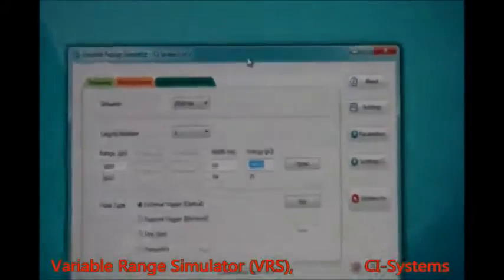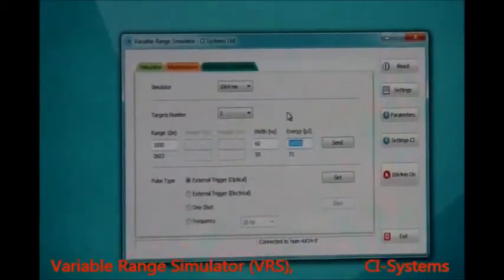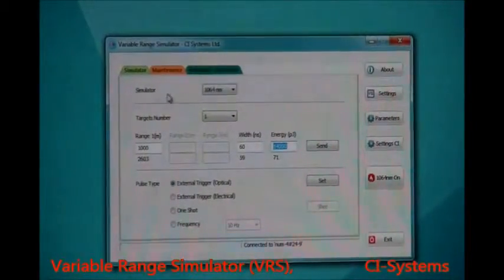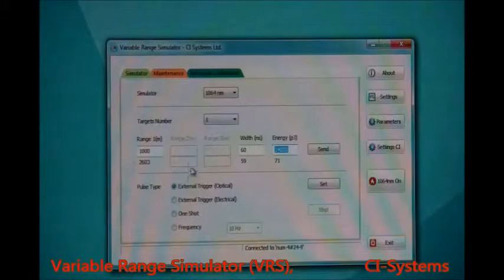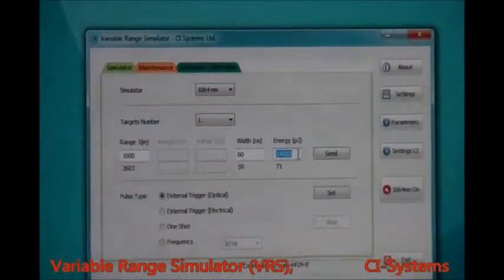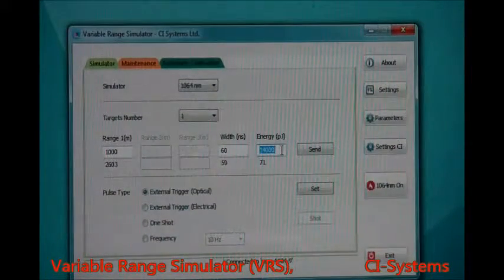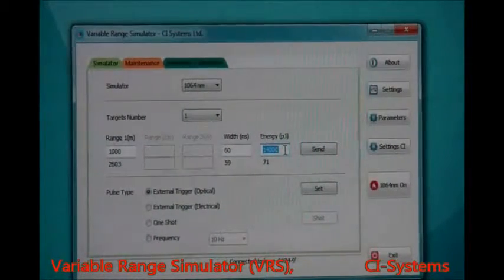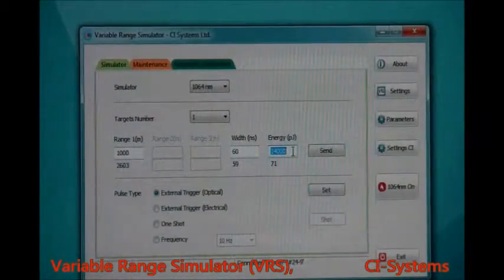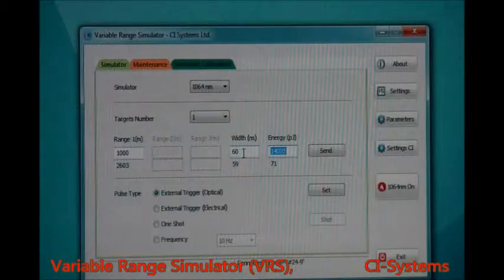We're going to just look a little bit at the Windows application that we wrote to control the VRS. As you can see from the main window, there are a lot of different things we can do with this application, but the first thing we're going to do is be able to change basically three parameters. We can do multiple pulses, so we can demonstrate multiple pulses one after the other for your gating of your LRF and other applications.